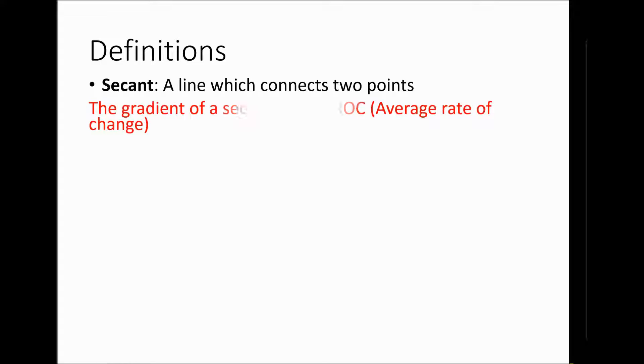So we're going to start with just some definitions here. So our first definition is a secant. It's simply a line which connects two points. Typically on a curve, it could be a circle. It doesn't need to necessarily be a function, but it's a line connecting two points.